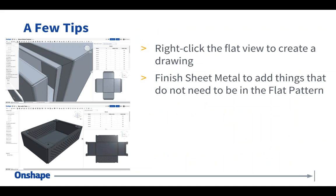A few tips: Right-click the flat view to create a drawing. Make sure to Finish Sheet Metal to add things that do not need to be in the flat pattern — gussets, standoffs, any of those types of things added after the part is cut. Do a Finish Sheet Metal and then model all those things as if it were a normal part. If you try to add material to a sheet metal part before doing Finish Sheet Metal, you'll run into errors, because it has to follow the rules of being uniform and being able to unfold.